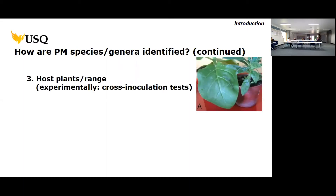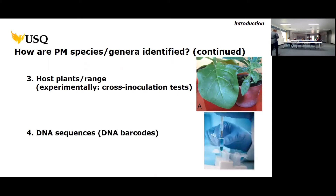The third clue to identify powdery mildews is their host plants. Some crops — like wheat, barley, grapes, or apple — are infected with only a single powdery mildew species. However, other plants are infected with multiple species, making the host range an interesting and complicated issue. And of course we have DNA sequences — so-called DNA barcodes — which I will discuss in more detail.